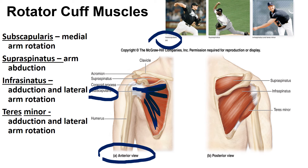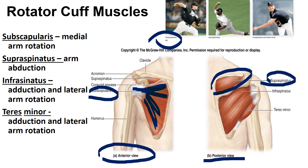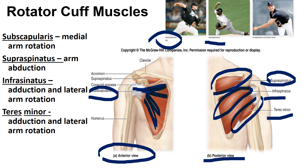The supraspinatus is located above the spine of the scapula on the posterior side, and is involved in full abduction of the arm. The infraspinatus is below the spine of the scapula on the posterior side, and helps with adduction and lateral rotation of the arm. The teres minor has the same action as the infraspinatus — adduction and lateral rotation of the arm.